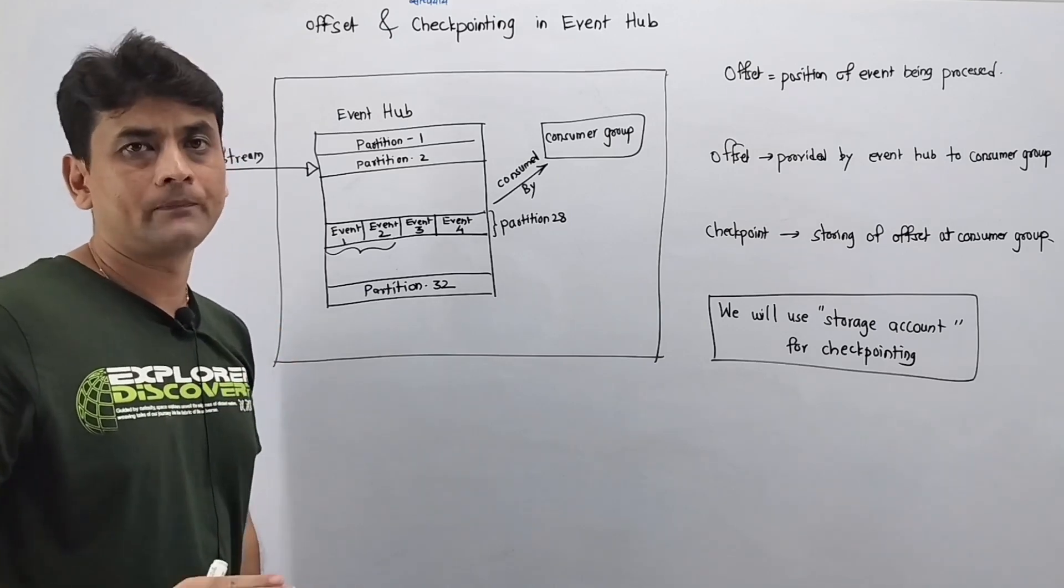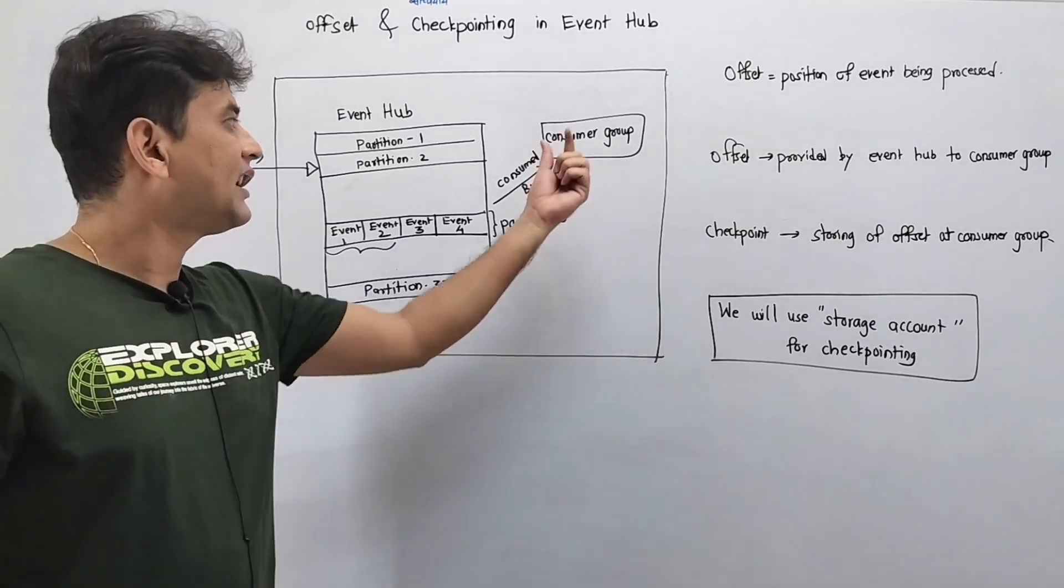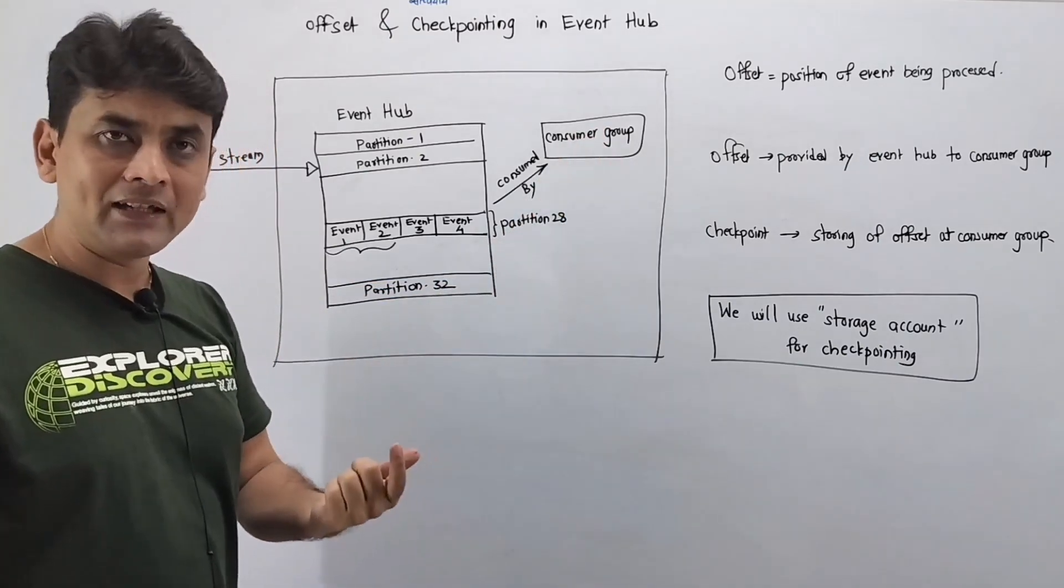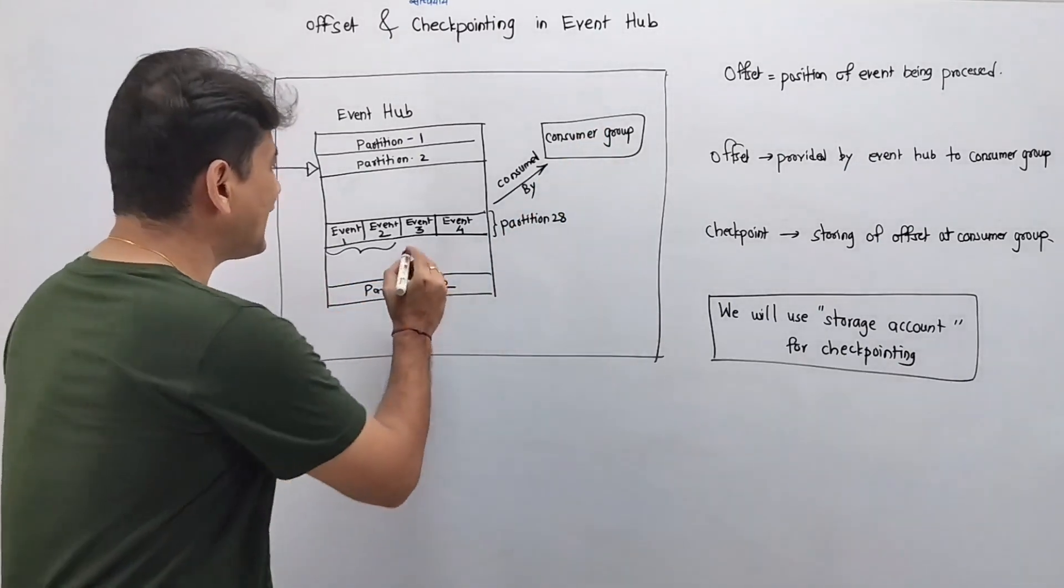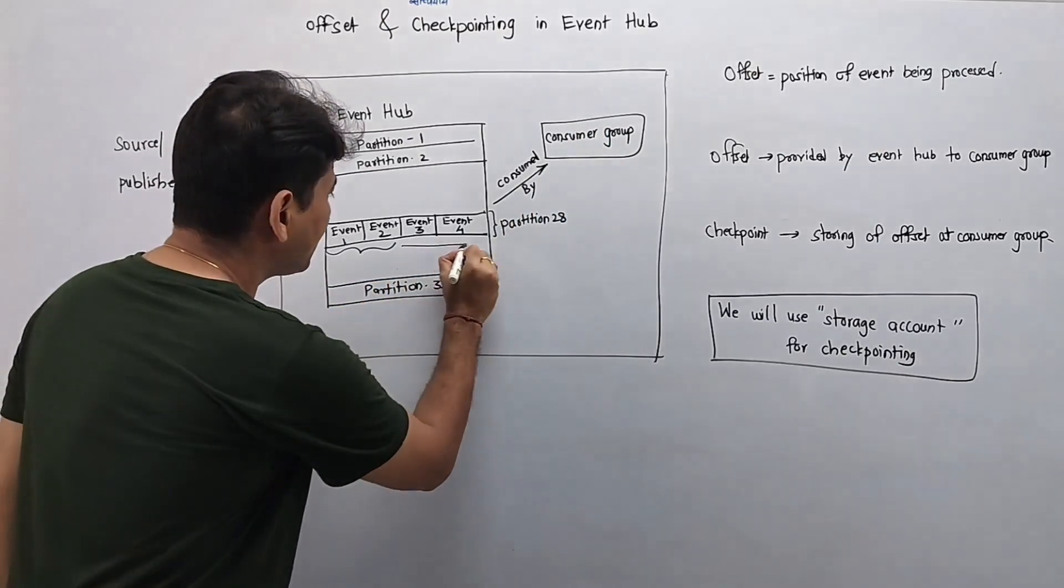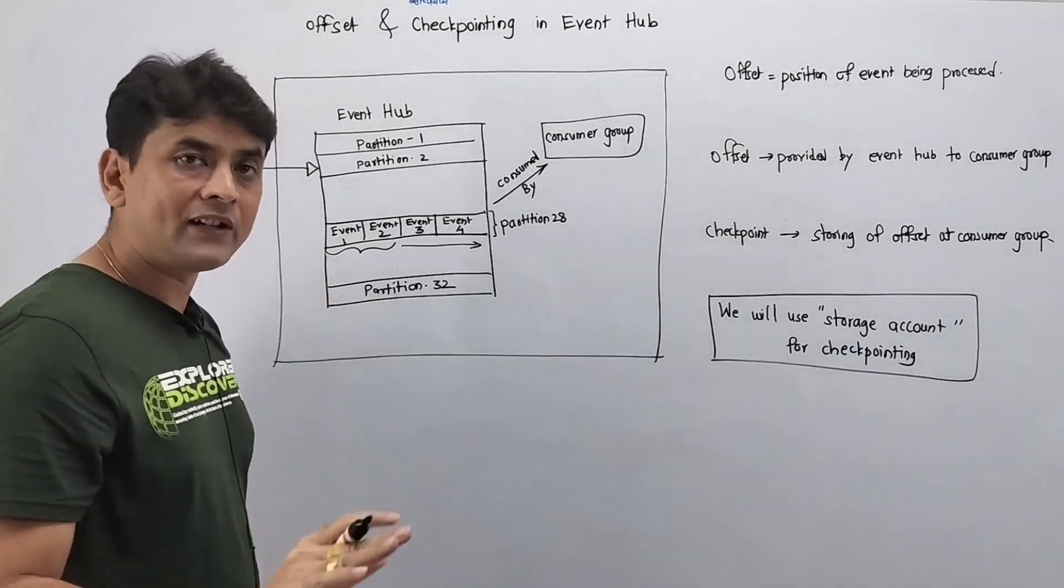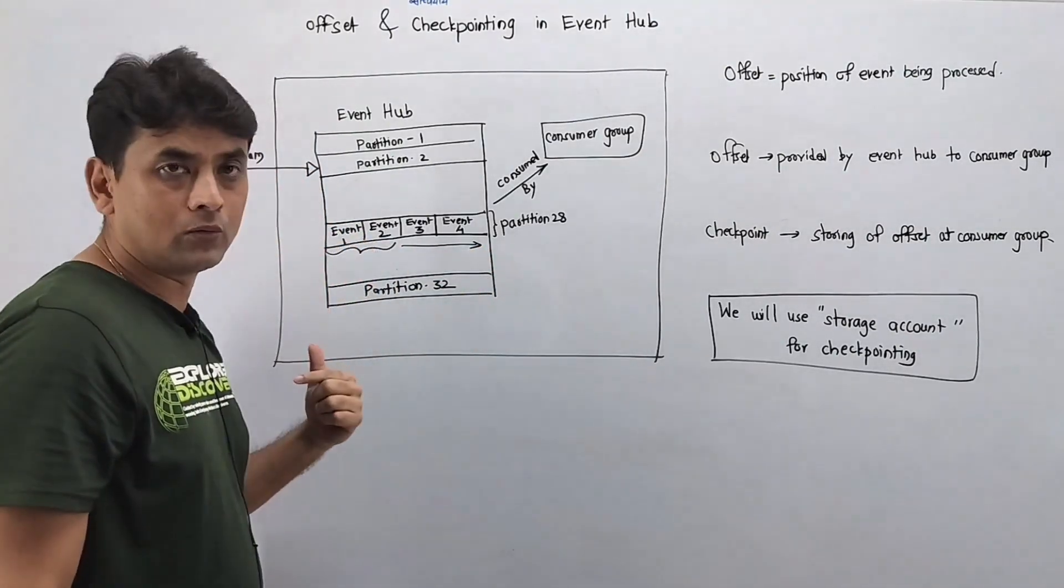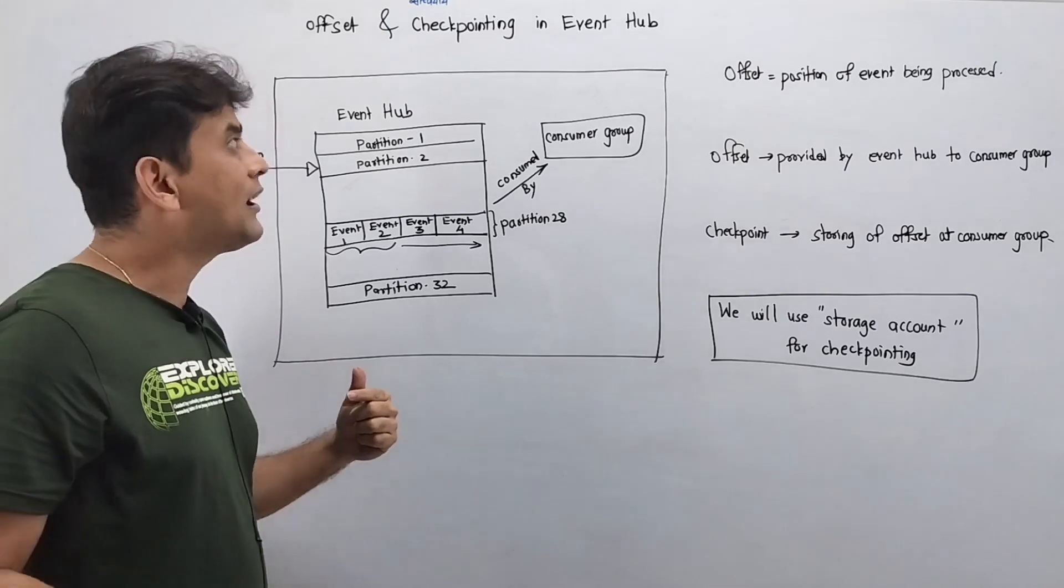When this consumer group comes back online, it will start reading events from three onwards, from this onwards. So it will not read events one and two. This is because we have this offset.